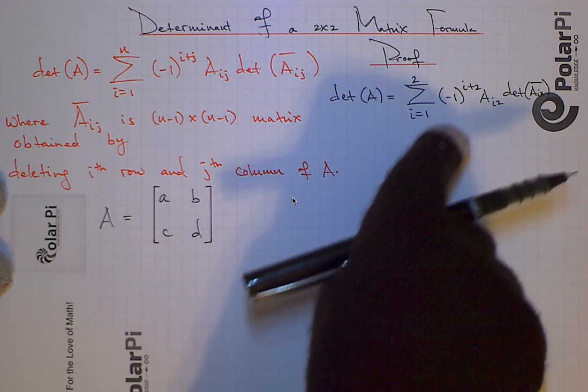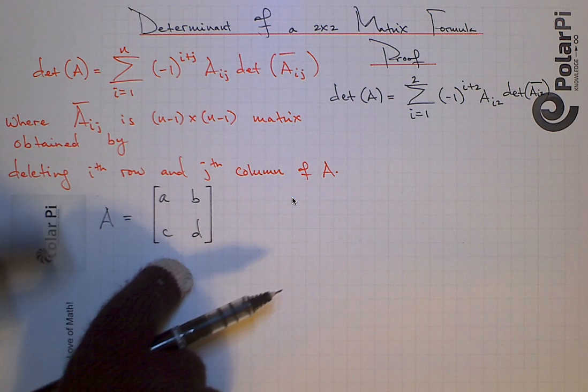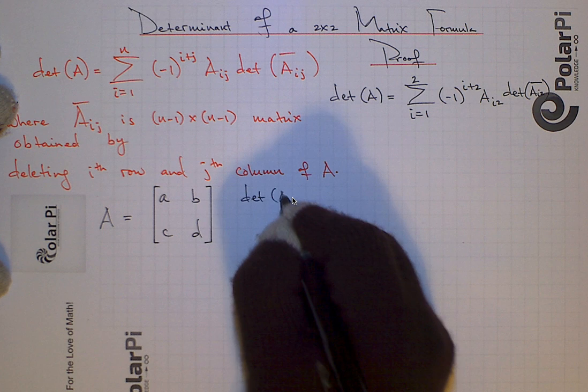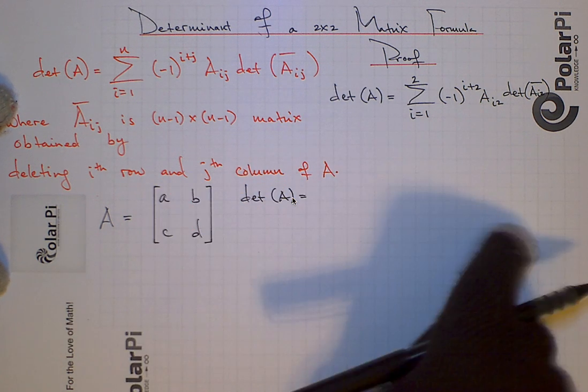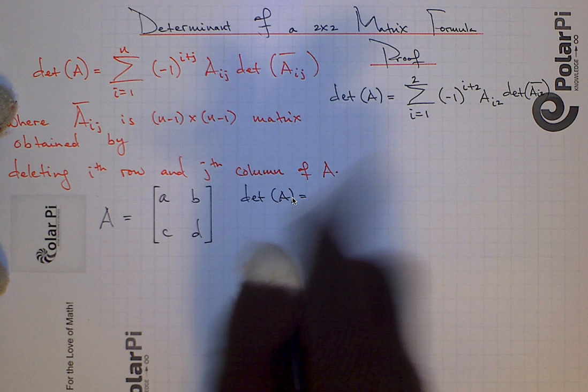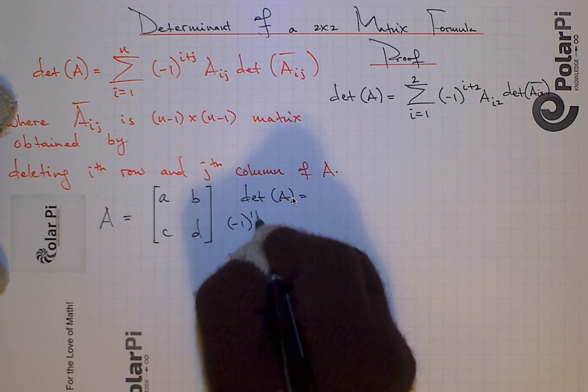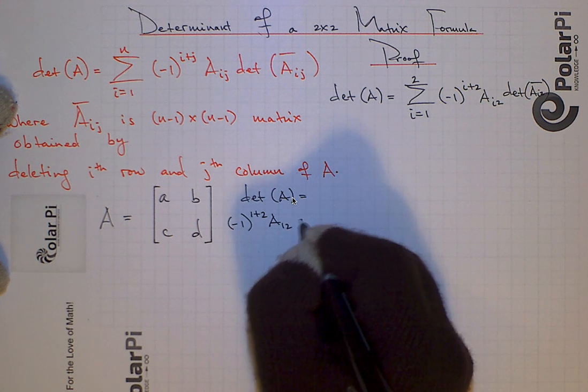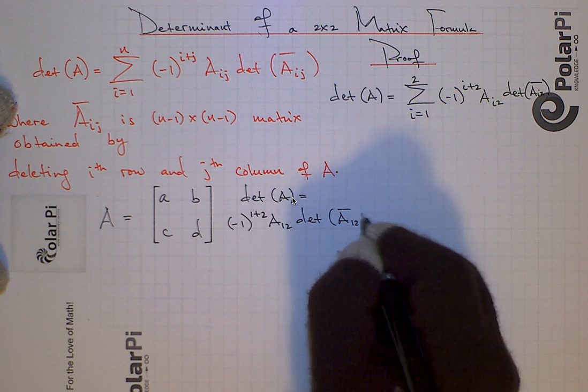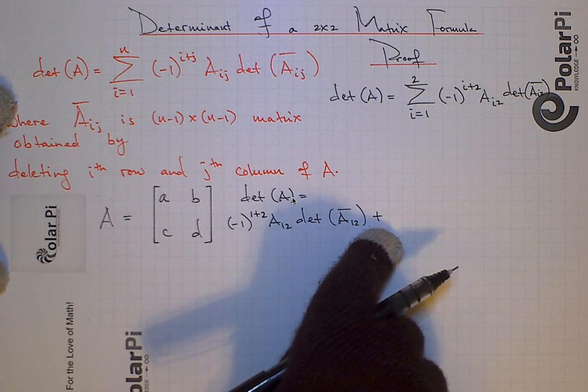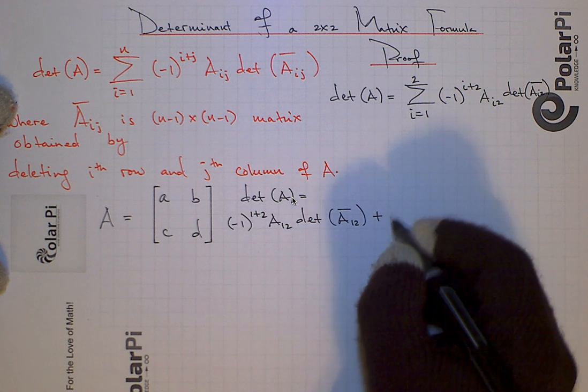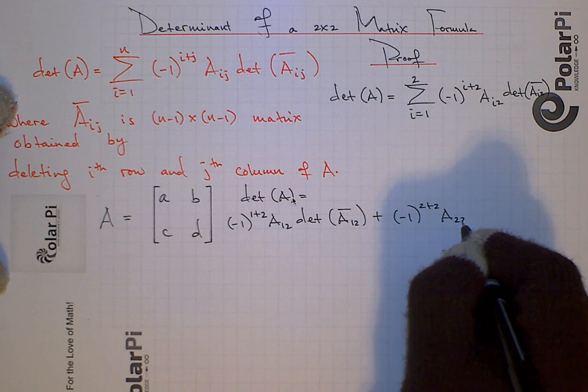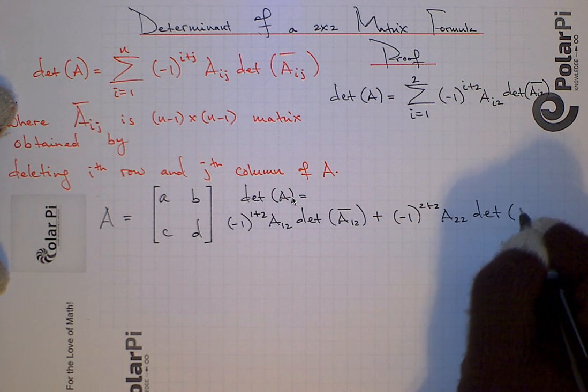So now applying this formula, which we've again adopted to our situation from the general formula, we see that the determinant of our matrix A is going to be the following. And I'm going to need the space, so I'm going to start writing right here. So when we let I equal 1, we'll have negative 1 to the 1 plus 2 power and then it's A12 and then it's going to be the determinant of A12 bar. And then when we interpret sigma, meaning add and go on to I equals 2, we'll be able to write negative 1 to the 2 plus 2 power and then A22 times the determinant of A22 bar.